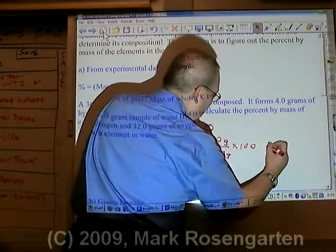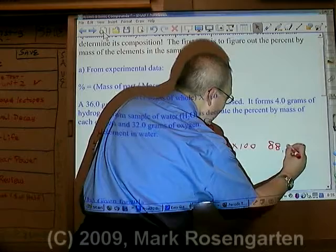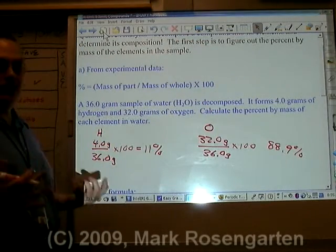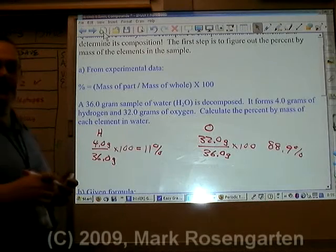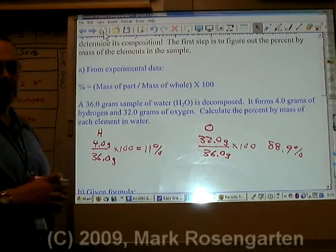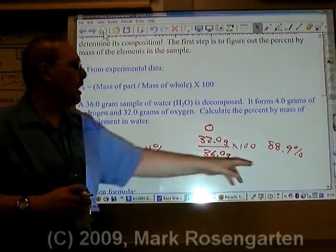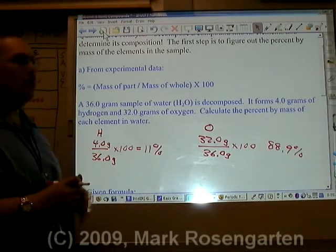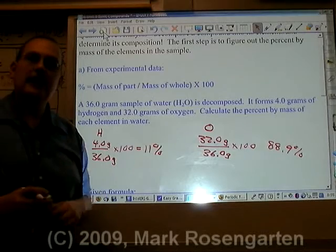Oxygen makes up 88.9 percent. You'll notice it doesn't round exactly to 100, but that's because of significant figures. It'll be right around 100. That's how you find the percent composition of elements in a compound with experimental data. Let me show you how to do it with formula mass.